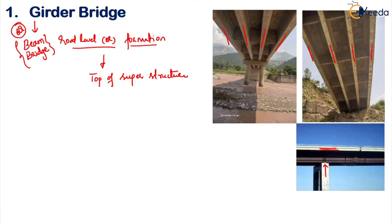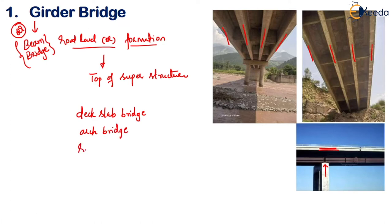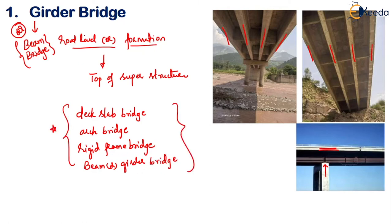In this type of bridge, there will be certain extra headspace available for vehicles to pass below. Some similar kinds of girder bridge types are your deck slab bridge, beam or girder bridge, arch bridge, and rigid frame bridge. All these are examples in which your road level or formation level is on top of the superstructure.